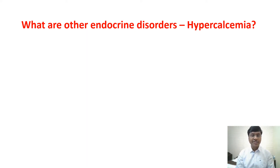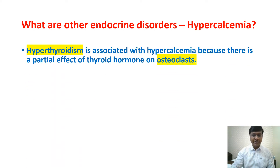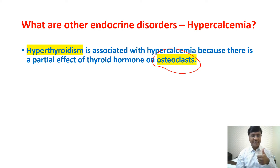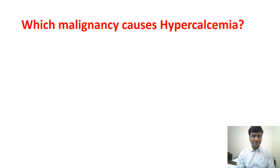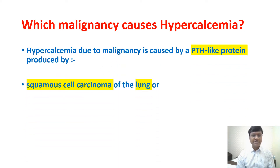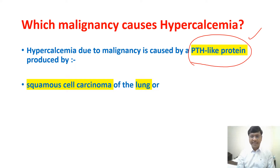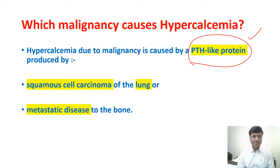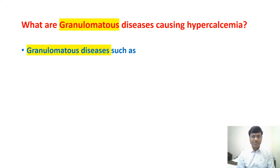Apart from hyperparathyroidism, other endocrine disorders contributing to hypercalcemia include hyperthyroidism. Thyroid hormone, when increased, stimulates osteoclasts, causing bone resorption and thereby hypercalcemia. Malignant causes include squamous cell carcinoma of the lung, which produces parathormone-like protein (PTHrP), increasing osteoclastic activity and causing bone resorption. Metastatic disease of the bone is another malignant cause.